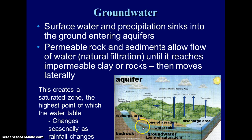The top boundary of the aquifer is the water table. The water table can rise and fall. If you have a wet season, your water table is going to be higher. If you experience drought, or you have a lot of people using the water, or a lot of irrigation, then your water table can drop.